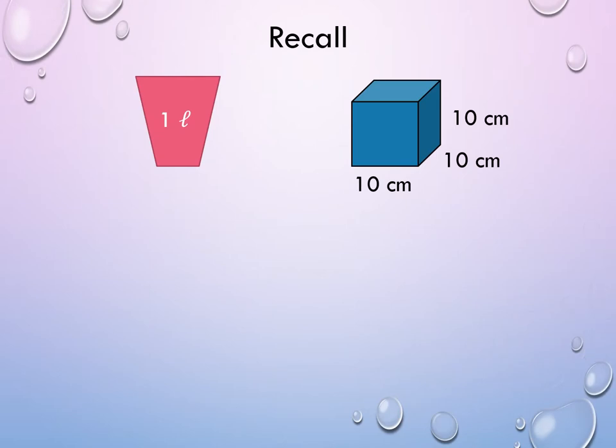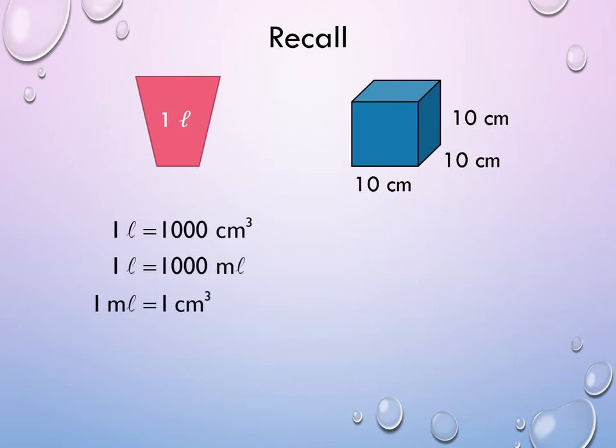Recall that previously, we had 1 liter of water in a jug, and we transferred all the water into a cubical container of size 10 cm, and the 1 liter of water filled the cubical container completely. So, 1 liter is equal to 1,000 cubic centimeters, and since 1 liter is also equal to 1,000 milliliters, therefore we can deduce that 1 milliliter is the same as 1 cubic centimeter.